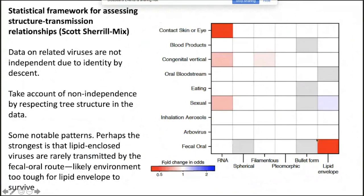One strong finding was that lipid-enveloped viruses are negatively associated with fecal-oral transmission. This makes sense: the lipid envelope is fragile — it can't survive the detergent effects of bile salts in the gut, drying, stomach acids, proteases, and so on. It makes a lot of sense that lipid-enclosed viruses are not transmitted by the fecal-oral route. There were some other generalizations we could make as well.